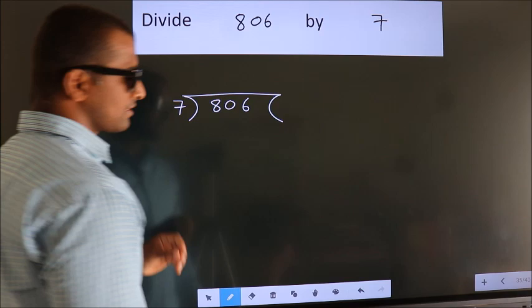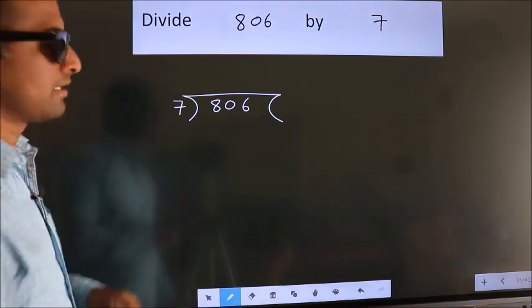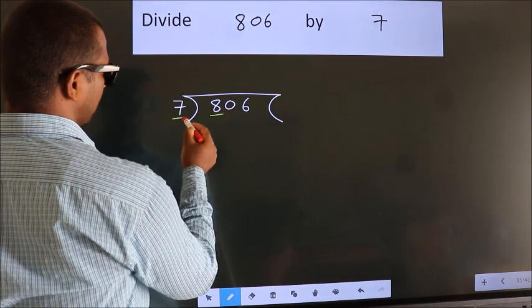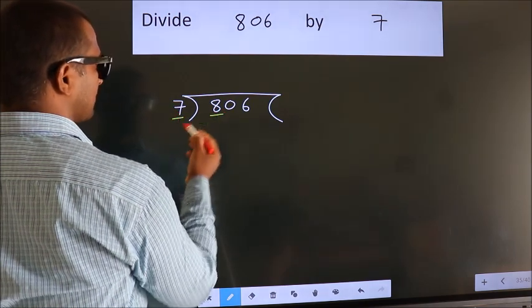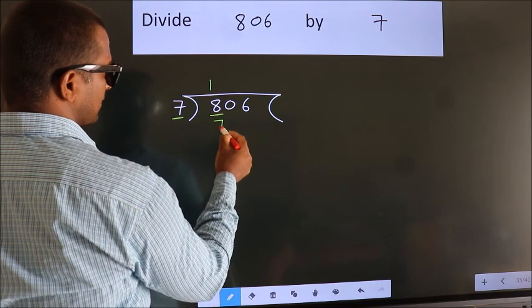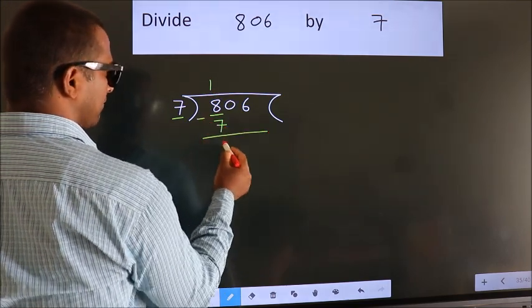This is your step 1. Next, here we have 8. Here 7. A number close to 8 in 7 table is 7 once 7. Now we should subtract. We get 1.